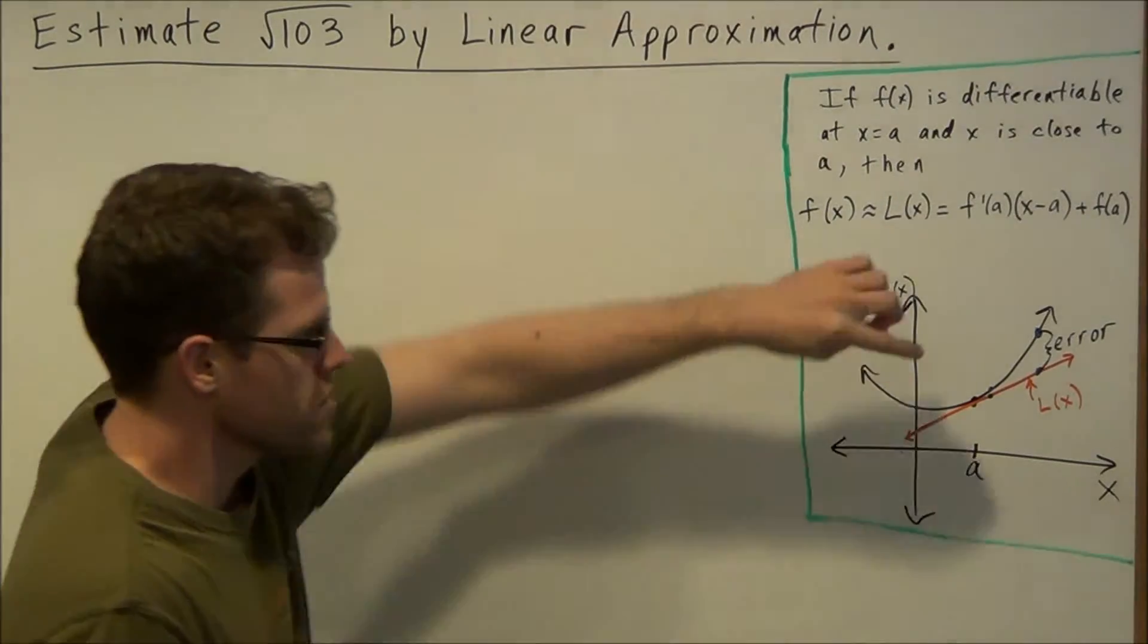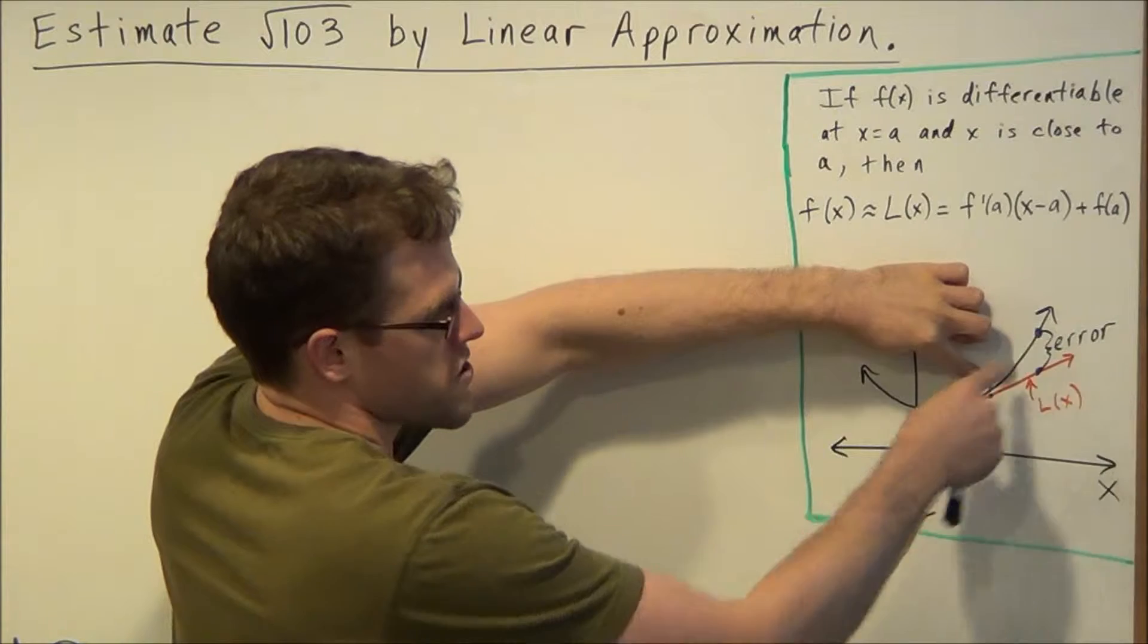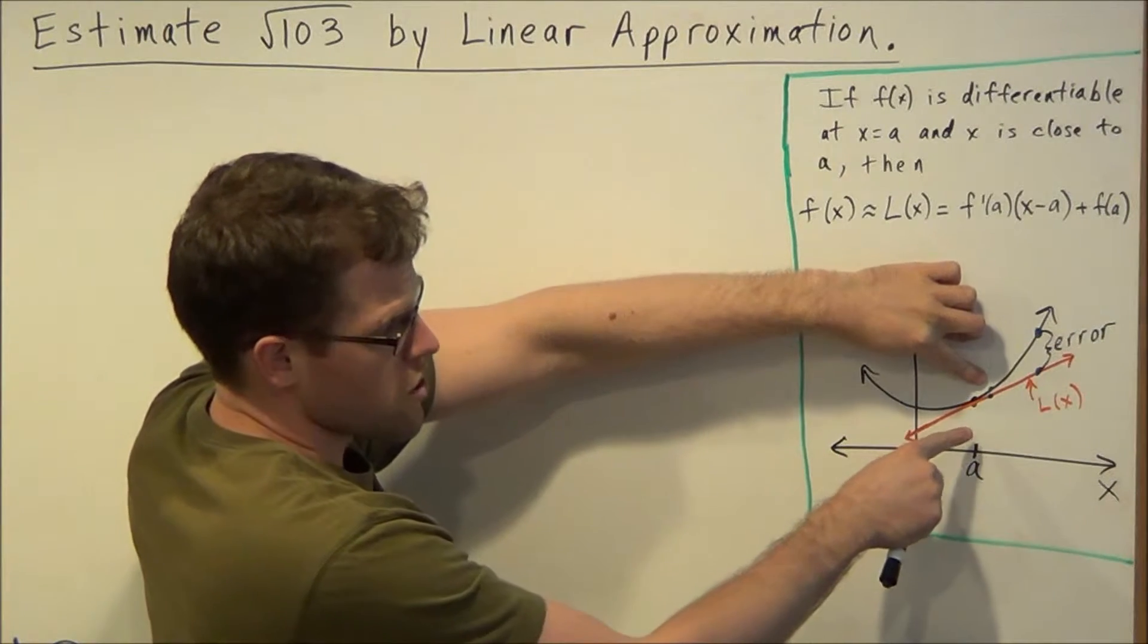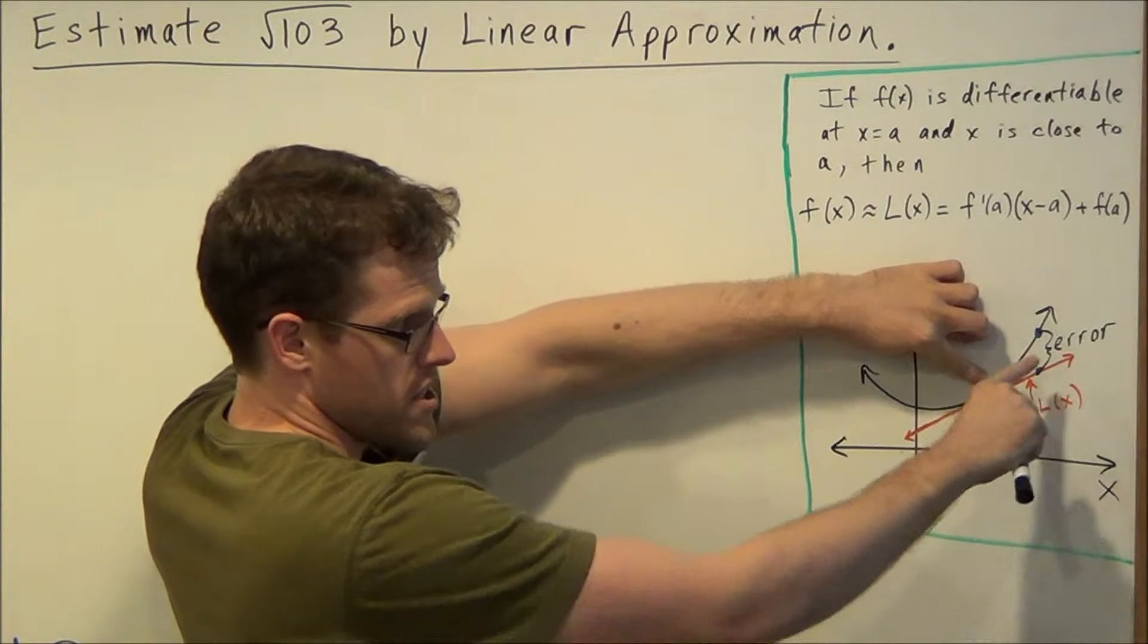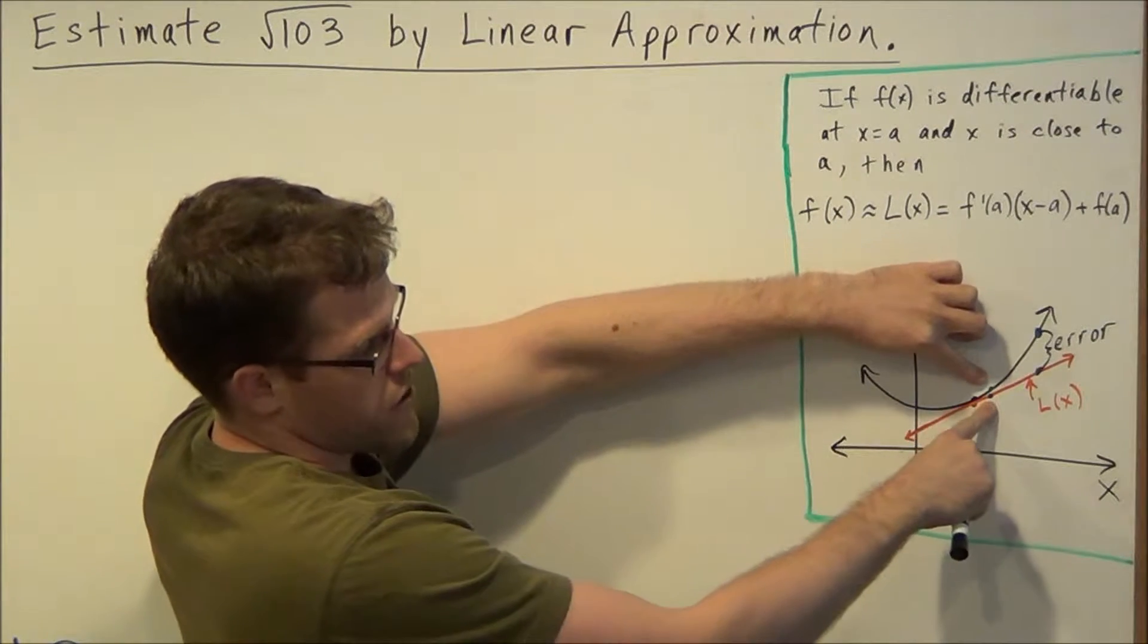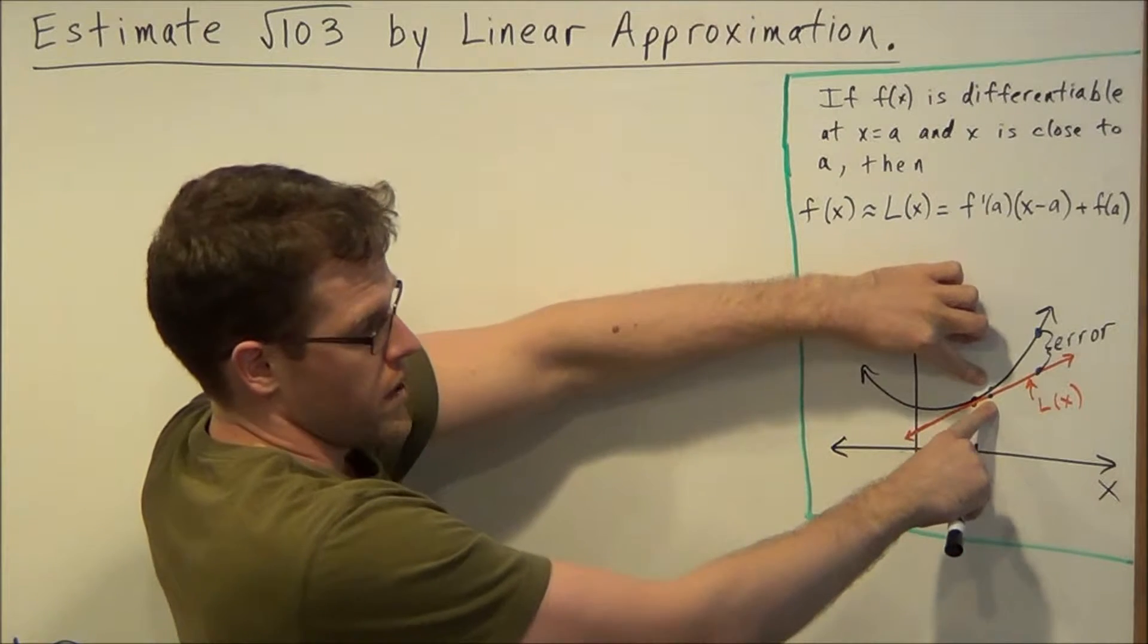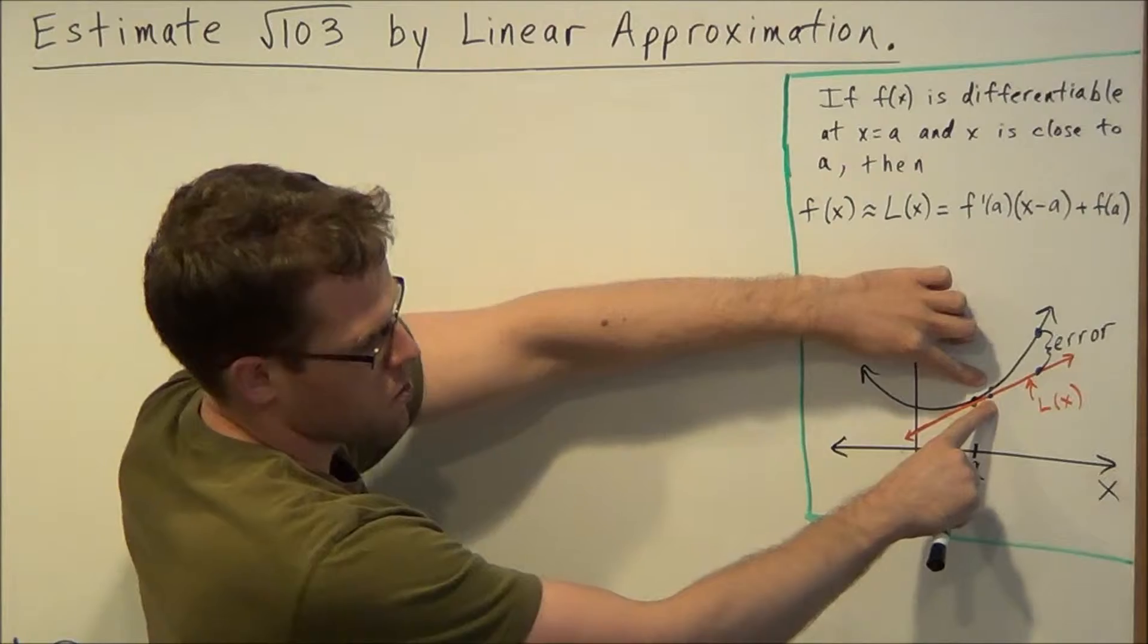If we want to approximate a value along some curve, we could find an equation for a tangent line. And as long as our point is very close to the point of tangency here, then this tangent line here in orange will be an accurate estimation for the real function value, because the gap between the tangent line and the curve is very small.